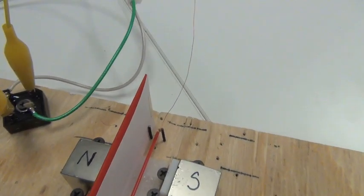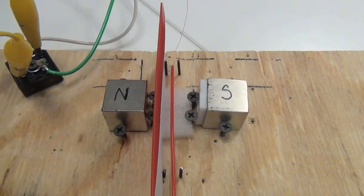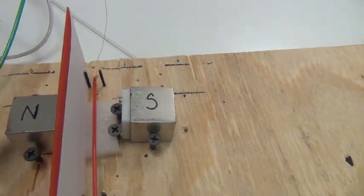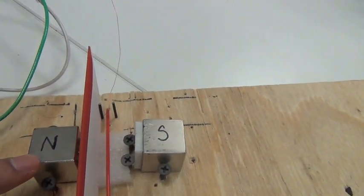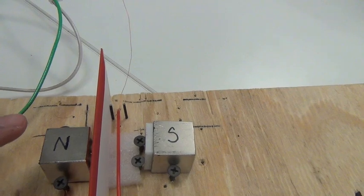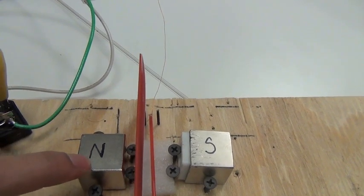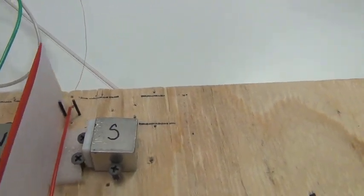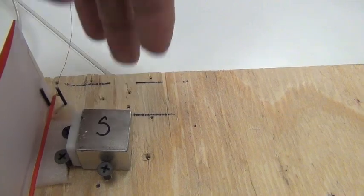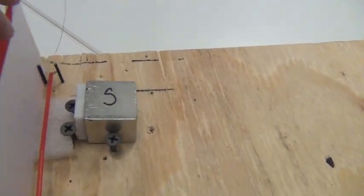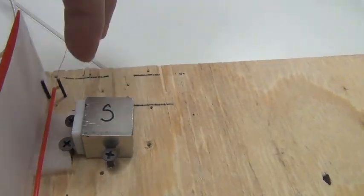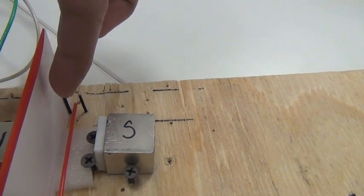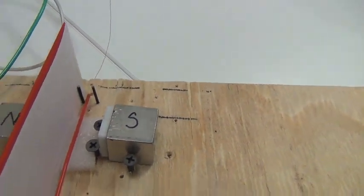What I have here is two rare earth magnets. This one is indicating as the north, and of course this is indicating as the south. And in between I'm just using this plastic to separate, so that when the wire moves you can see that it moves.